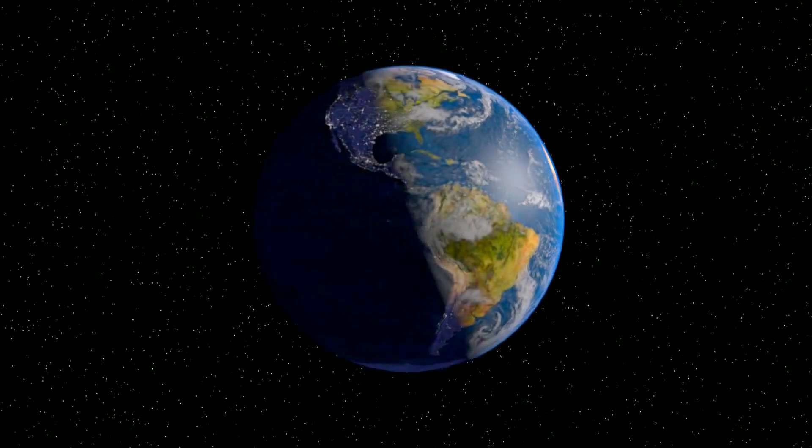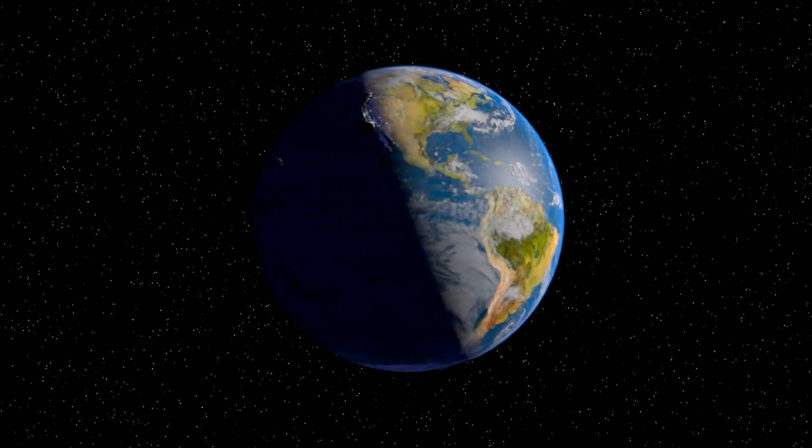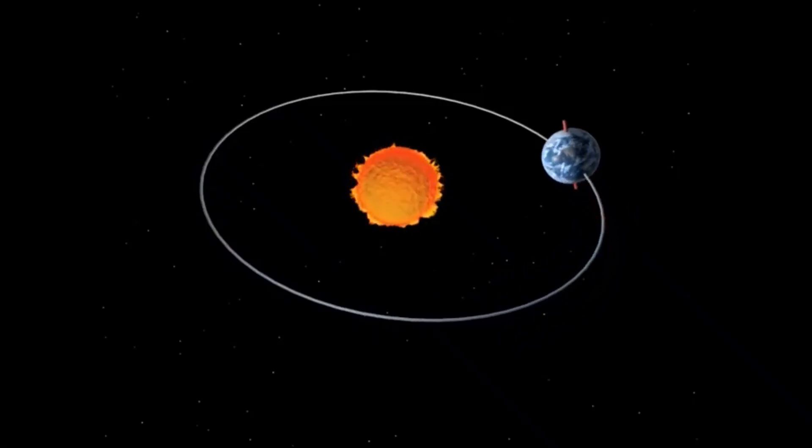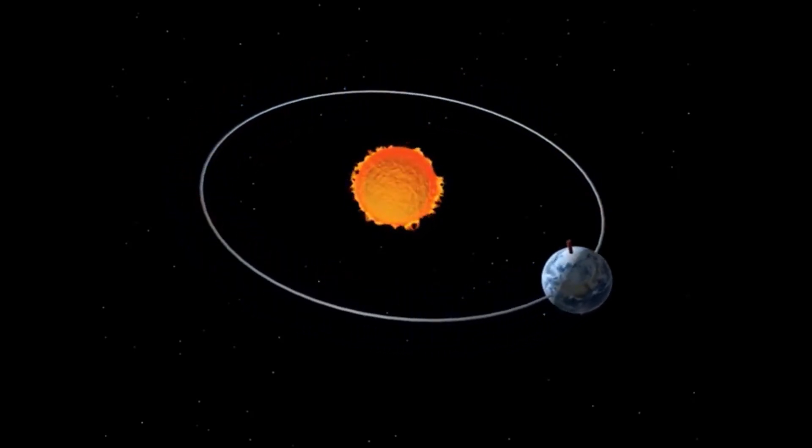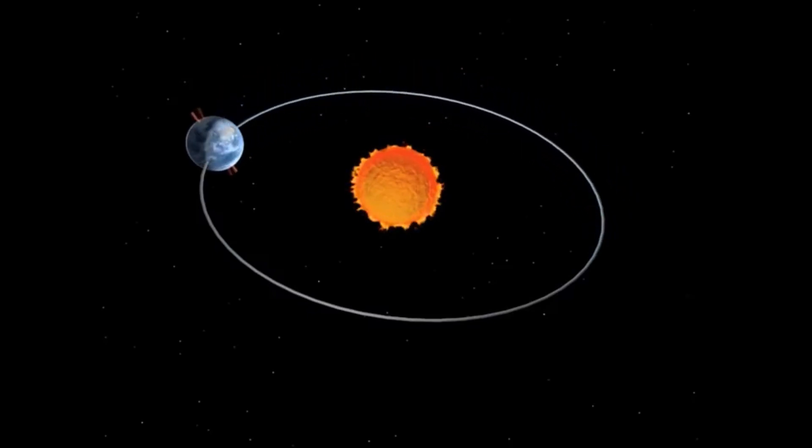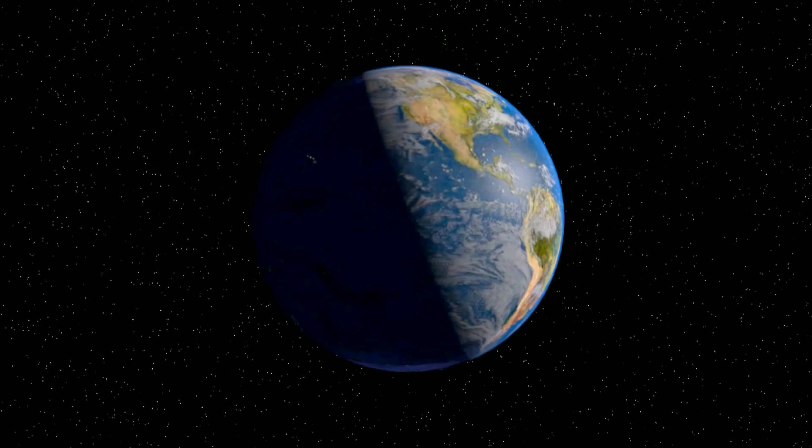Scientists recorded the shortest day in 2005, but in 2020 this record was broken already 28 times. For example, on July the 19th, 2020, the day ended 1.4602 milliseconds earlier than expected. This day was the shortest for the entire observation period.